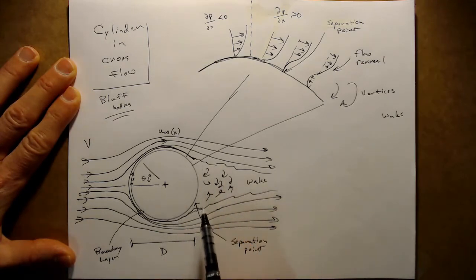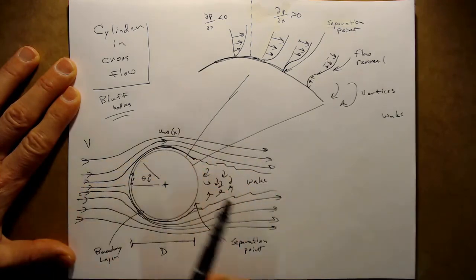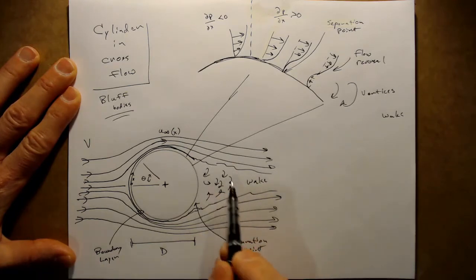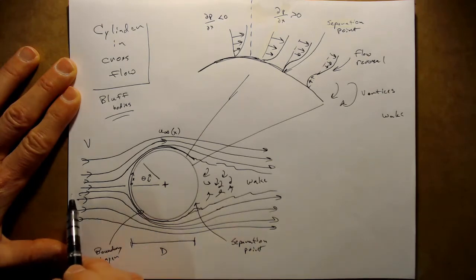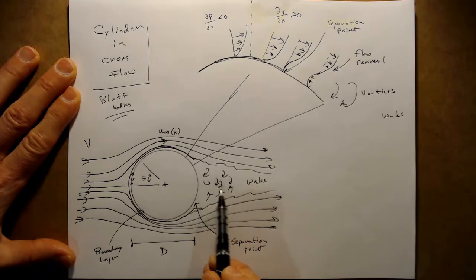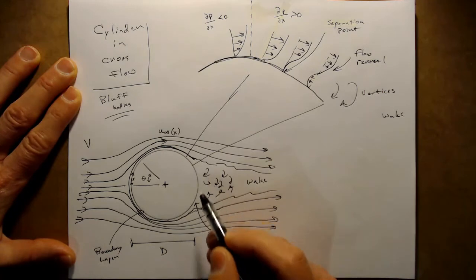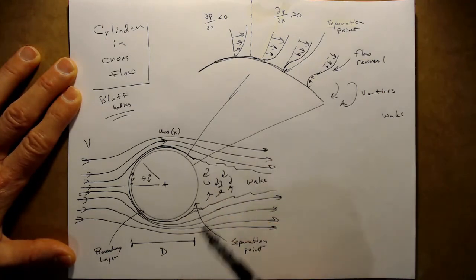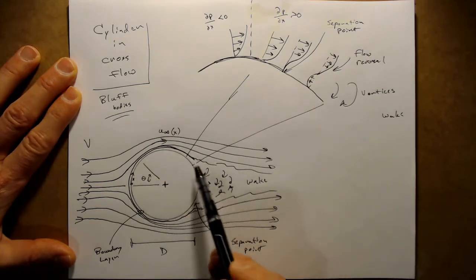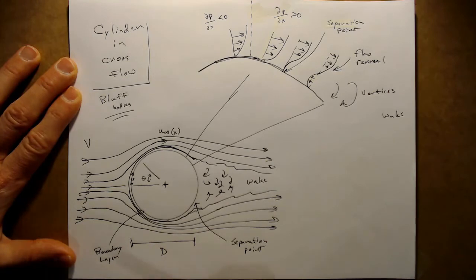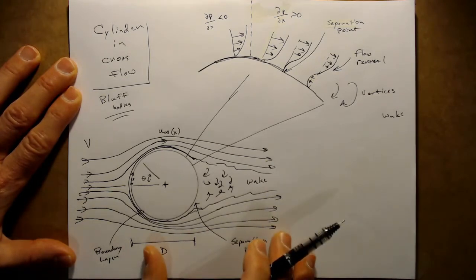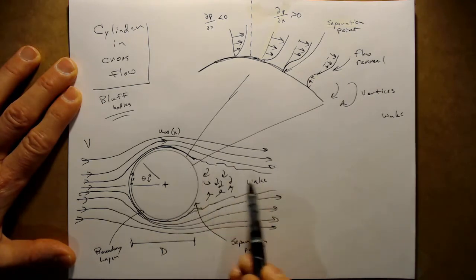The defining characteristic of a bluff body is that we expect it to generate a wake behind it at reasonably high flow speeds. If we drag a cylinder through a liquid, we would expect to see a wake trailing behind it, and in air at any reasonable velocity we would likewise expect a wake, which from observation we know is turbulent. As we found before, turbulence has a significant impact on heat transfer through advective mixing, so this turbulent wake will likewise have a significant effect on heat transfer. First, we want to consider why that wake forms.